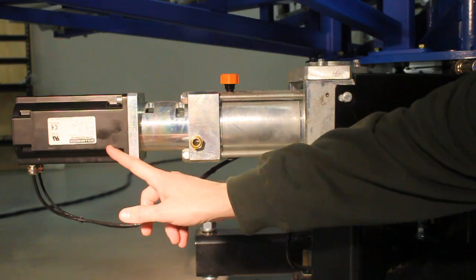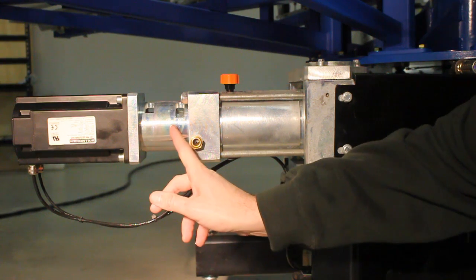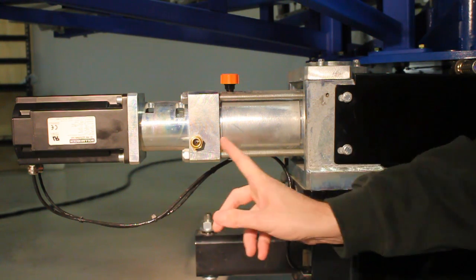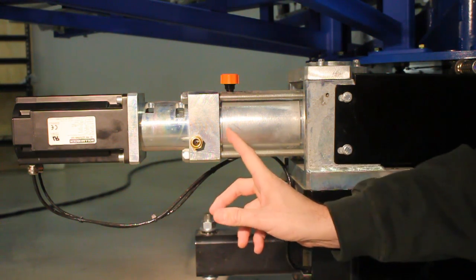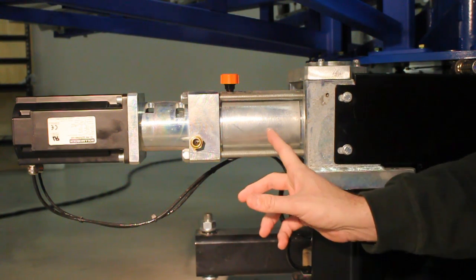This is a servo motor. This is a servo motor mount. And inside the servo motor mount is a servo coupling. It's attached to a ball screw. Now one of the unique features of the Mustang is that it's an encapsulated ball screw drive system.